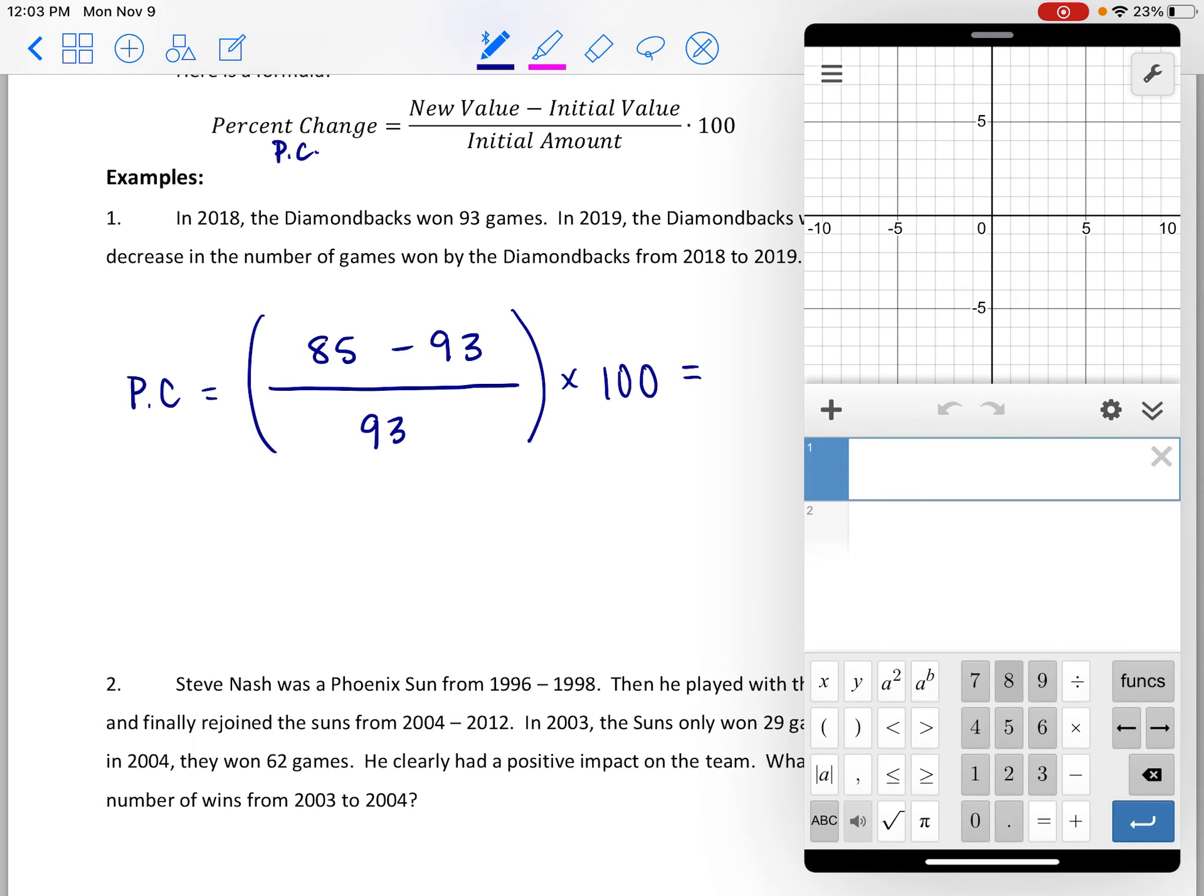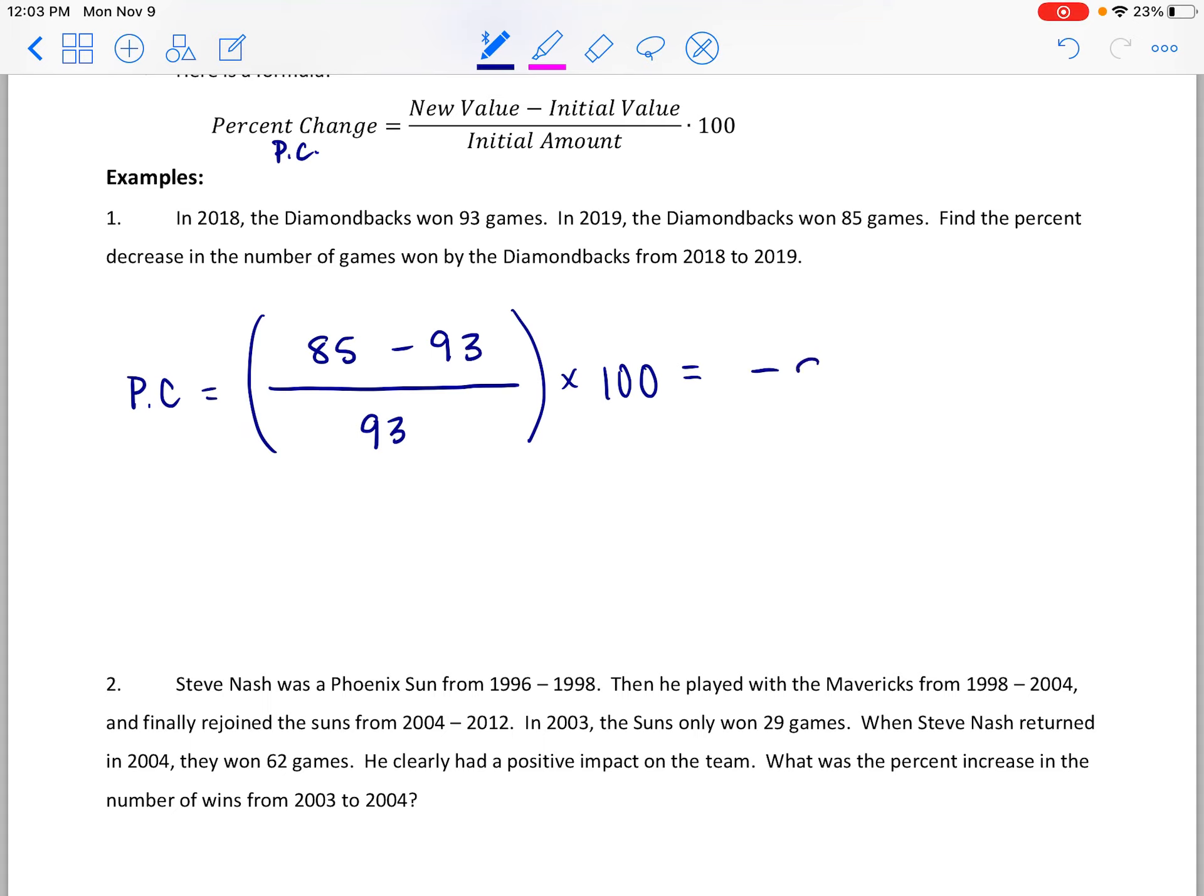We know this is going to be a percent decrease, so it should make sense that we're taking a smaller number and subtracting a larger number. They started out in 2018 with an initial 93 wins and then they went from that 93 down to 85 wins. If we take that fractional amount and multiply it by 100, we will get our percent decrease. So 85 minus 93, all of that divided by 93, and then we're going to multiply by 100, and so we have a negative 8.6.